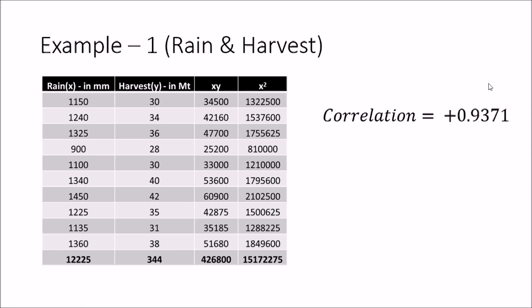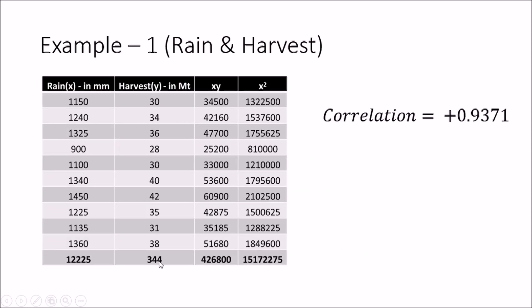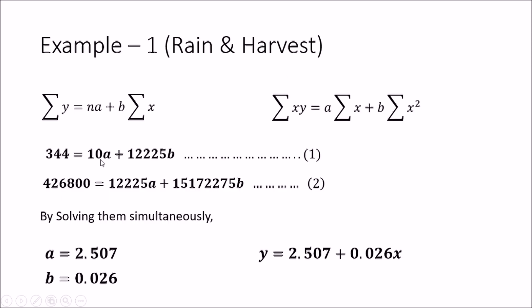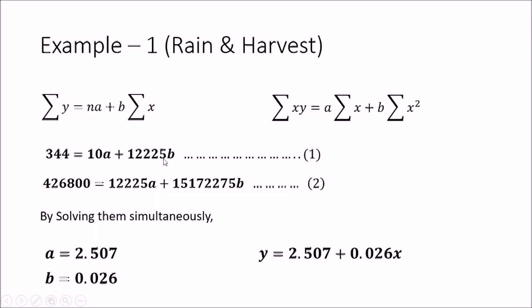To do that, we get Sigma X, Sigma Y, Sigma XY, and Sigma X squared. We substitute those values into the two equations: 344 is the Sigma Y, 10 is the total number of values, and Sigma X is 12,225. We substitute that into the first equation, and in the second equation we also substitute the values of Sigma XY and Sigma X squared.